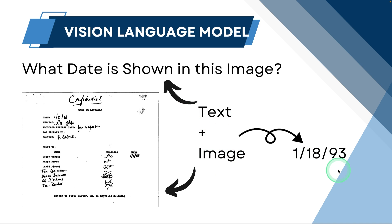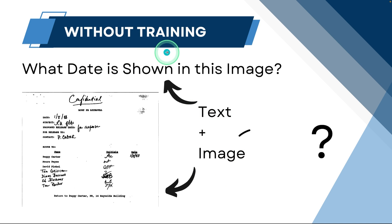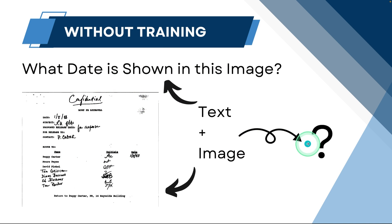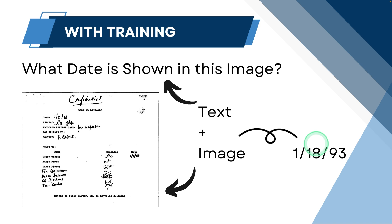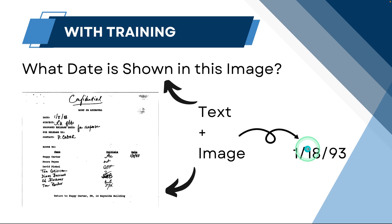So why do we need fine-tuning? Without fine-tuning, when you ask a question with the image, the model is not going to respond — for smaller models such as Florence 2. But after training or fine-tuning the model, it is clearly able to predict what the answer is.